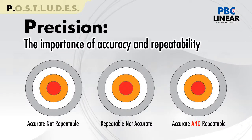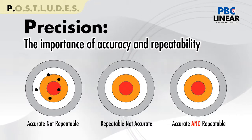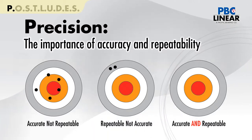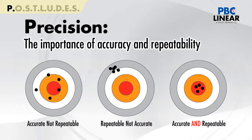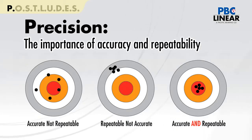P represents the precision required in accuracy or repeatability. Most users will tell you that their main concern is the repeatability of the product, usually in terms of repeatability of a movement to a position. Other users will tell you the smoothness of the move or noise is their major concern.